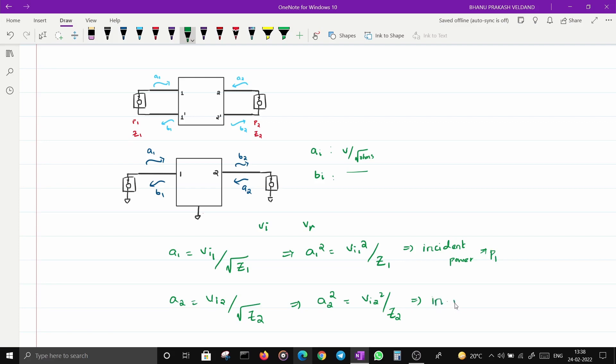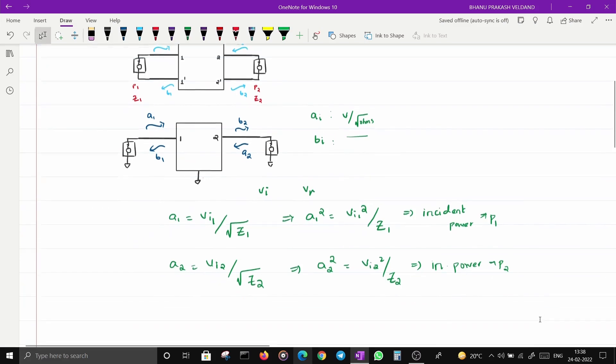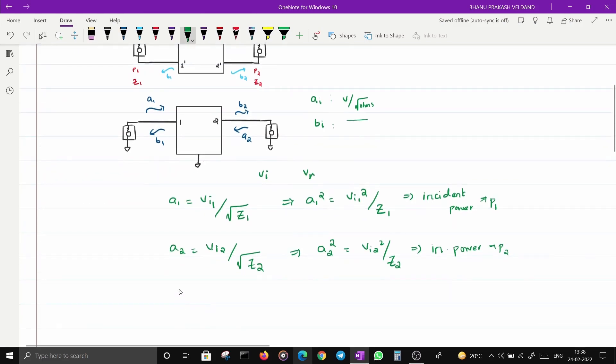If I am shooting some wave from port 2, this is the power. Similarly, B1 is V reflected 1 divided by root of Z1. Squaring this will give me V_R1^2 / Z1, which is reflected power. And B2 is V_R2 divided by root of Z2.